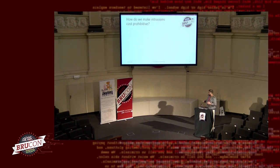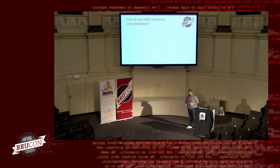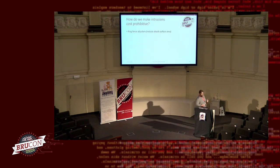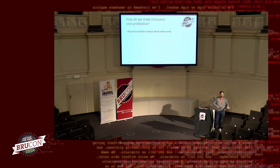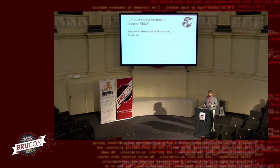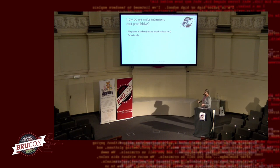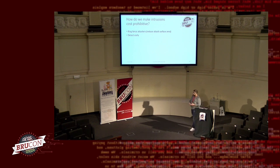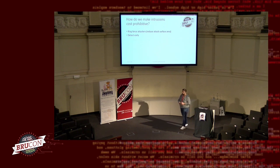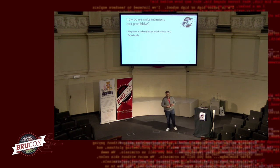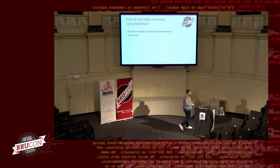How do you make intrusions cost-prohibitive? You ring-fence attackers. If an attacker shows up on your network, maybe give them a honey network to play around with. You want to track their activities and detect early — that is absolutely key. If you're not spending money and time on content engineering, that is the number one thing you should be doing. If you invest a million dollars in a SOC or buy a shiny SIEM but have no one writing use cases relevant to your line of business, you're not making use of that investment.